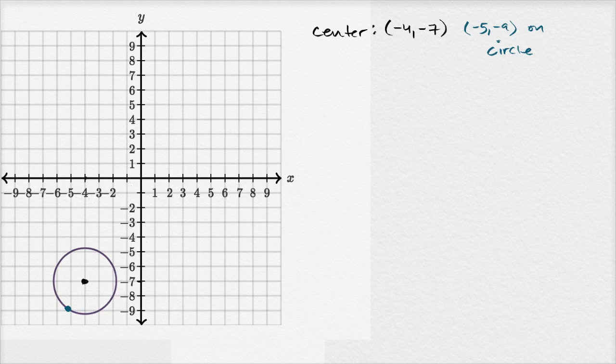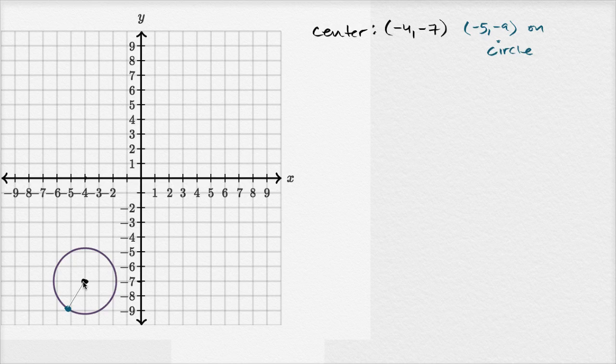So how do we find out the distance between these two points? The length of that orange line. Well, we can use the distance formula, which is essentially the Pythagorean Theorem.